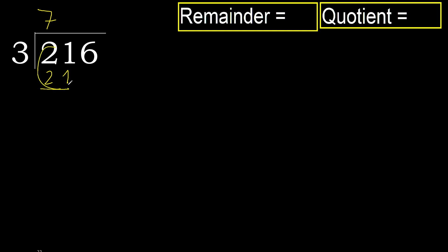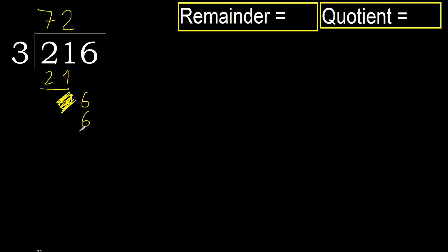Subtract 0. Next, eliminate 0 on this side. Bring down 6. 3 multiplied by 3 is 9 — too big. Multiplied by 2 is 6, which is not greater. Subtract 0. Next.